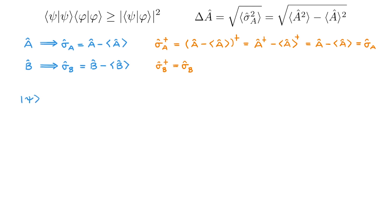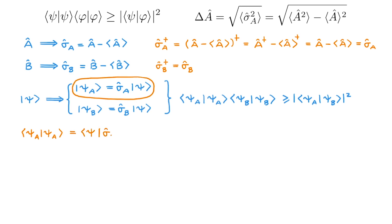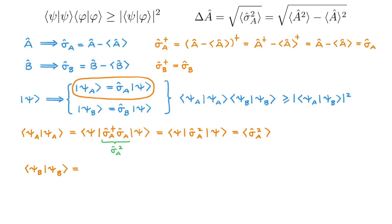Also consider state psi for our system. We define state psi A as equal to sigma A acting on psi, and state psi B as equal to sigma B acting on psi. We can straight away apply the Schwarz inequality to these two states, giving that the bracket of psi A with psi A times the bracket of psi B with psi B is larger than or equal to the absolute value squared of the bracket of psi A with psi B. Evaluating these, we find that the bracket of psi A with psi A equals the expectation value of sigma A squared, and similarly for psi B, while the bracket of psi A with psi B equals the expectation value of sigma A times sigma B.